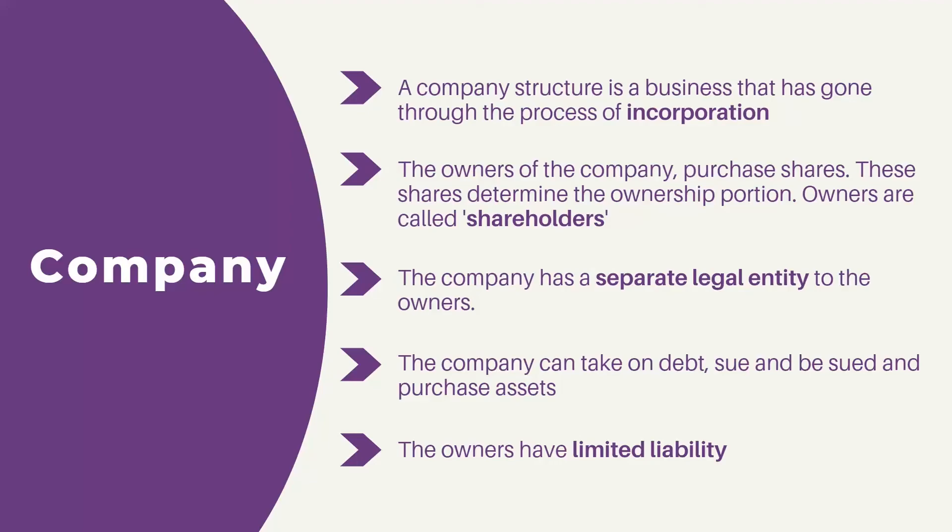Companies have a separate legal entity to the owners or shareholders. This means the company can enter into contracts with suppliers, purchase property, or take on debt from a bank. The company can also sue or be sued, as well as own assets. Once incorporated, the company is considered a separate legal entity and therefore the owners have limited liability, meaning shareholders are only liable for the company's debts to the extent of their investment.